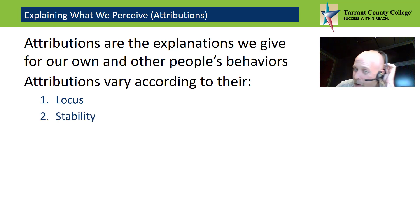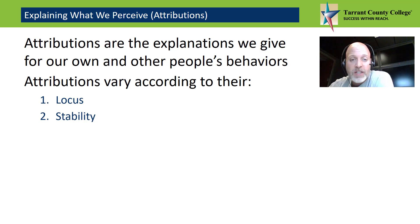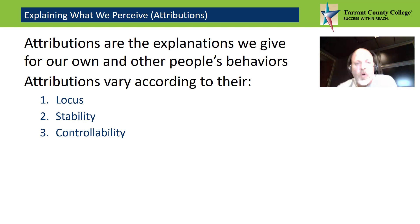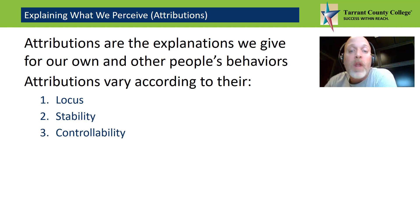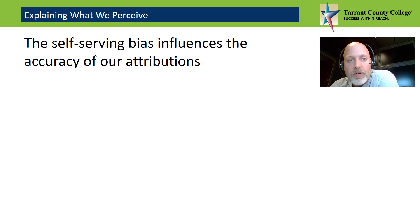A second dimension of attribution is whether the cause of behavior is stable or unstable. A stable cause is one that is permanent, semi-permanent, or at least not easily changed. Finally, causes of behavior also vary in controllability. If you make a controllable attribution for someone's behavior, then you believe the cause of the behavior was under that person's control. In contrast, an uncontrollable attribution identifies a cause outside that person's control.